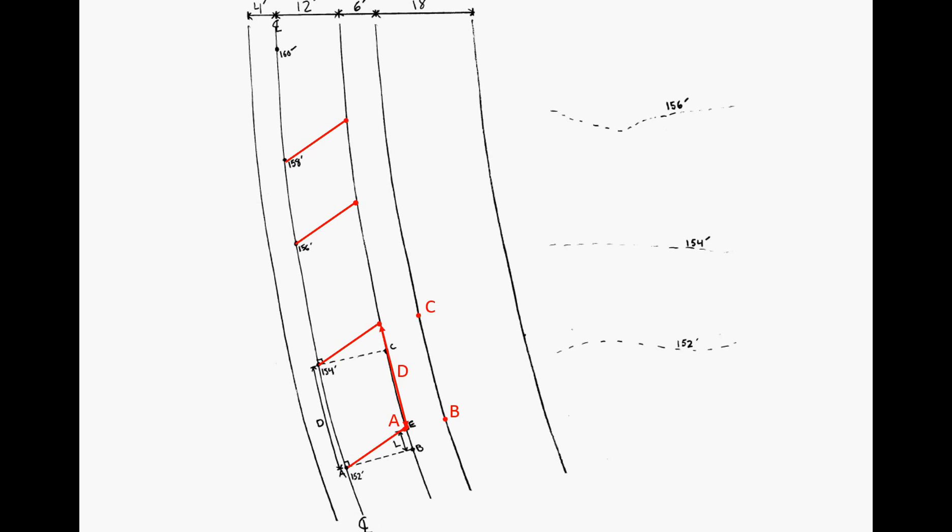We do that along the pavement and then move over to the shoulder. Again, we reset our points. Now we're moving over to the shoulder—we have A, B, C, and we can measure D. Then we calculate L and draw in our contour line.